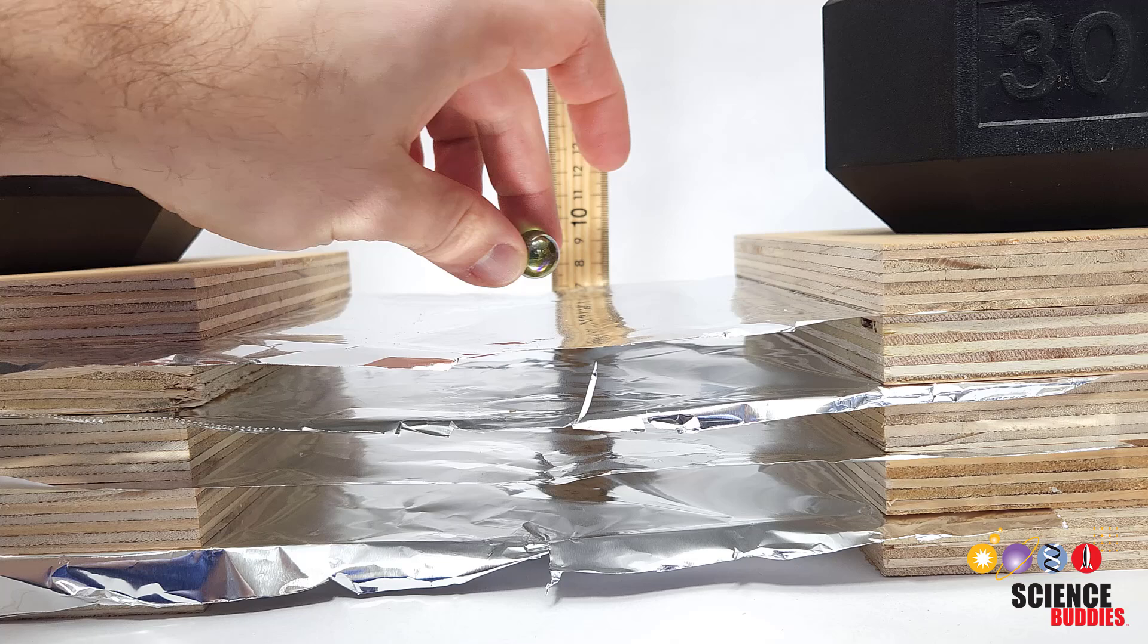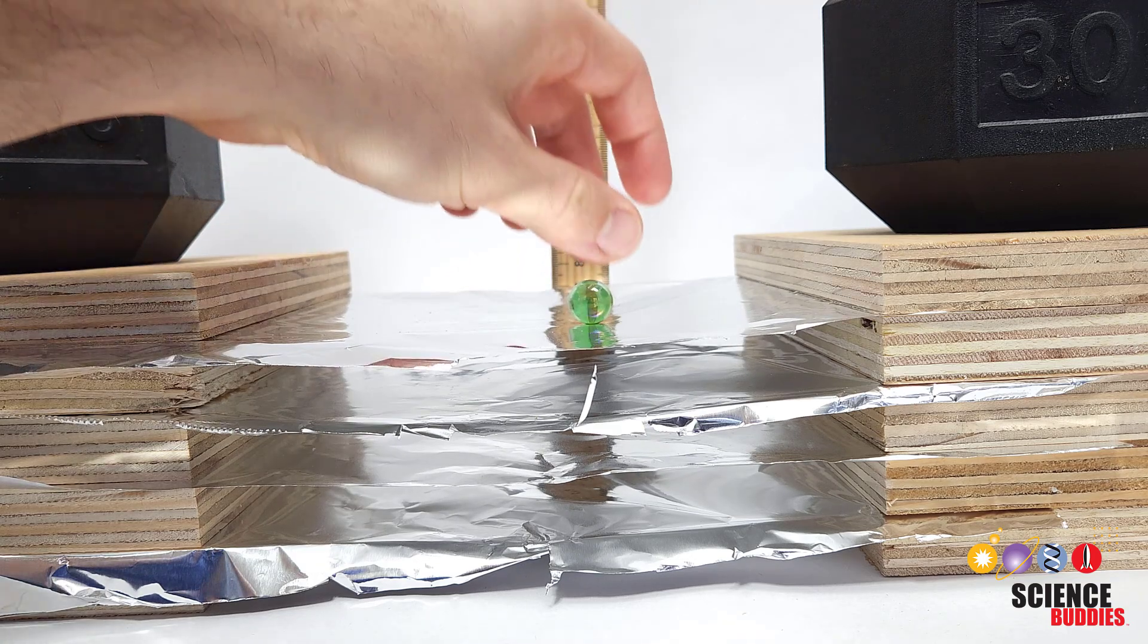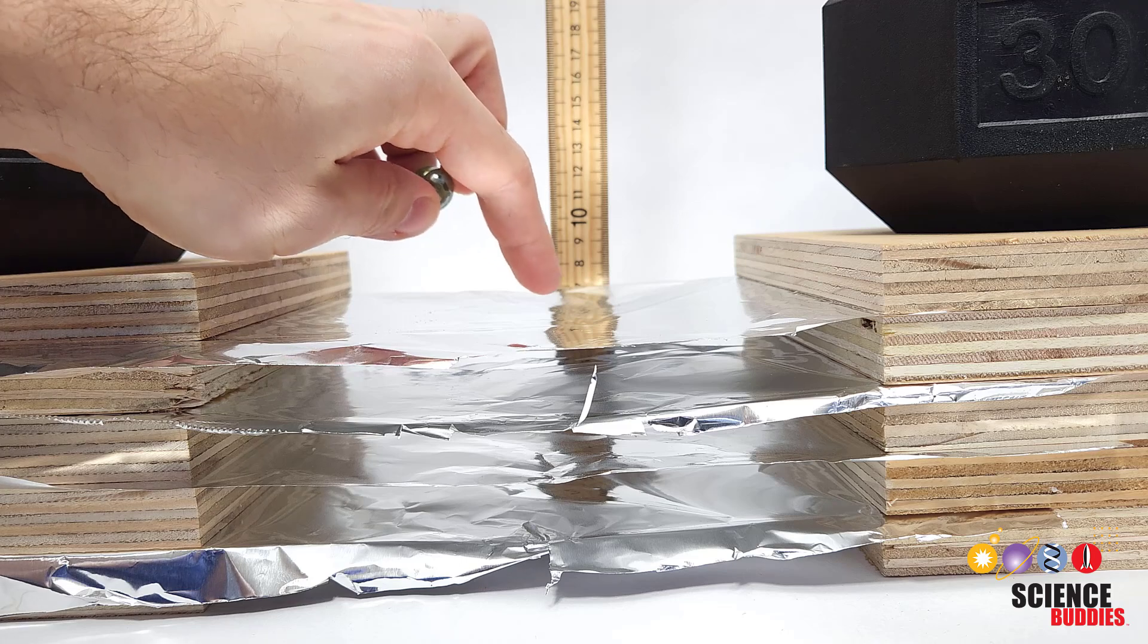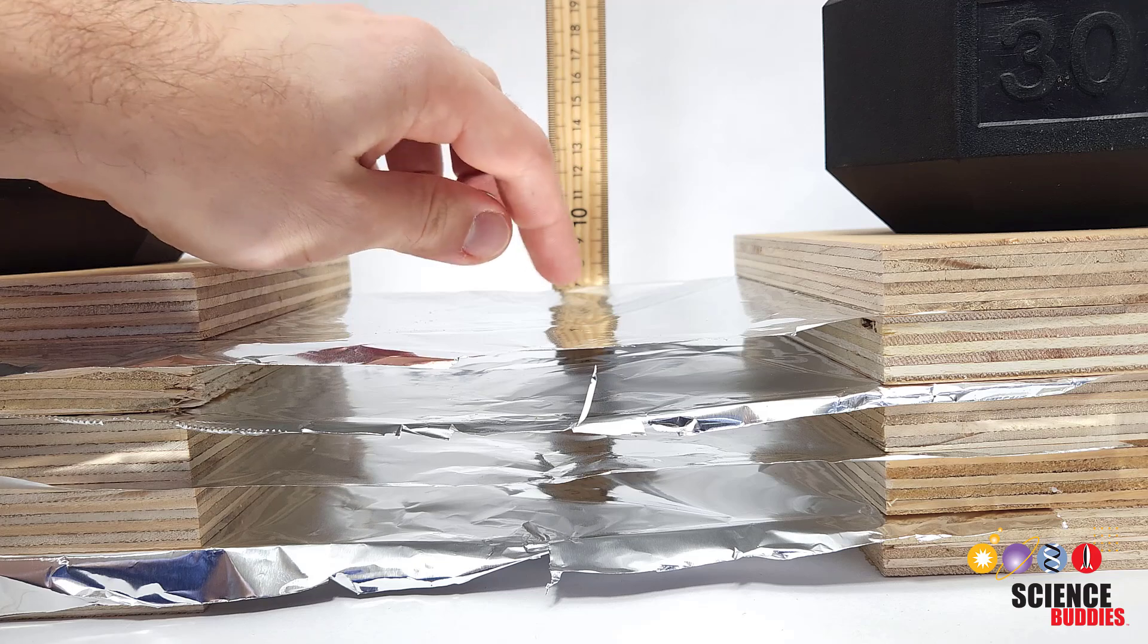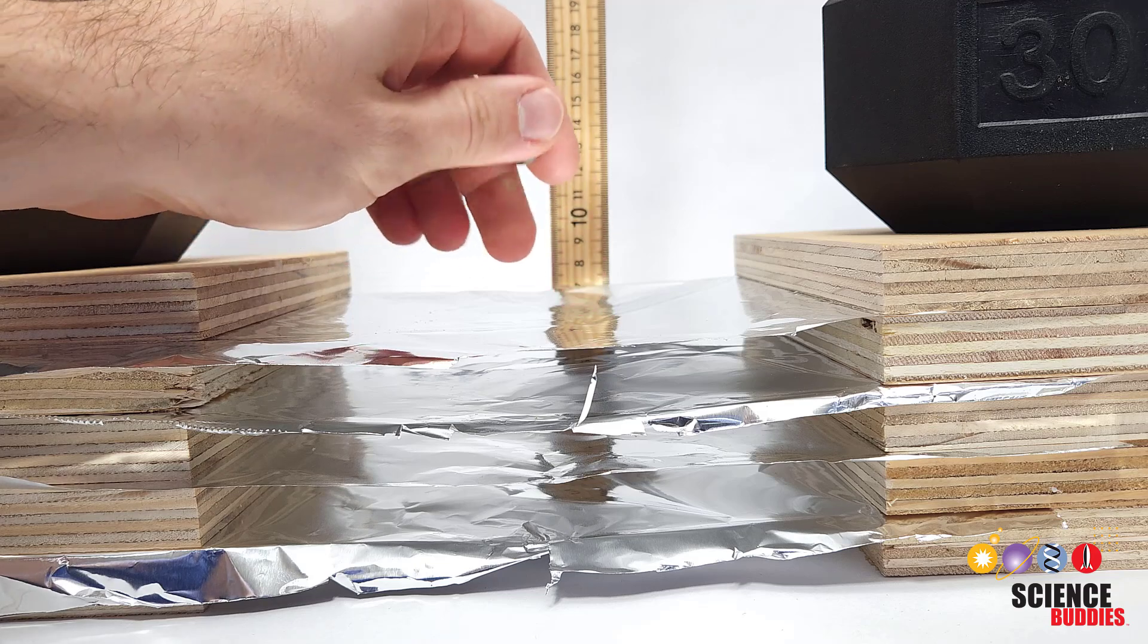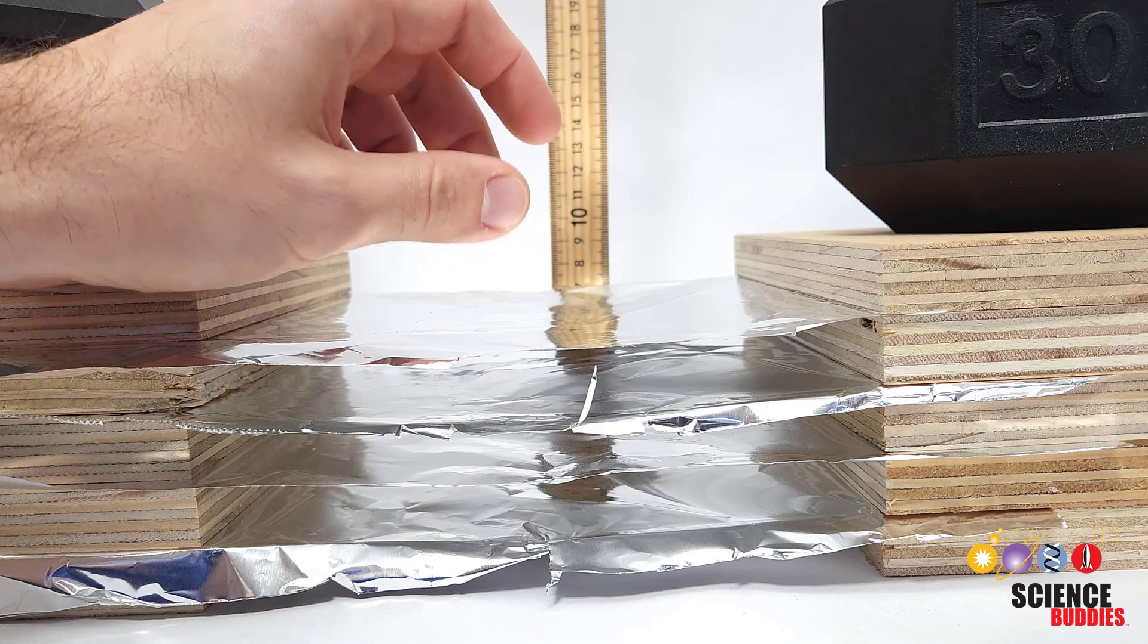I can start out by dropping the marble from a fairly low height, for example 10 centimeters, then inspecting the shield for damage and replacing any damaged layers. In this case, it didn't even punch through the first layer, but I have a little dent in the top, so I would want to replace the top sheet just because damage can accumulate over successive drops.